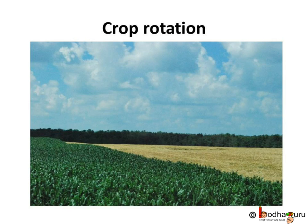There is another way of replenishing the soil with nutrients, called crop rotation. In this method, crops are grown alternately. Farmers in northern India used to grow legumes as fodder in one season and wheat in the next season. This helped in the replenishment of the soil with nitrogen. Crop rotation is a good method for replenishment of the soil.